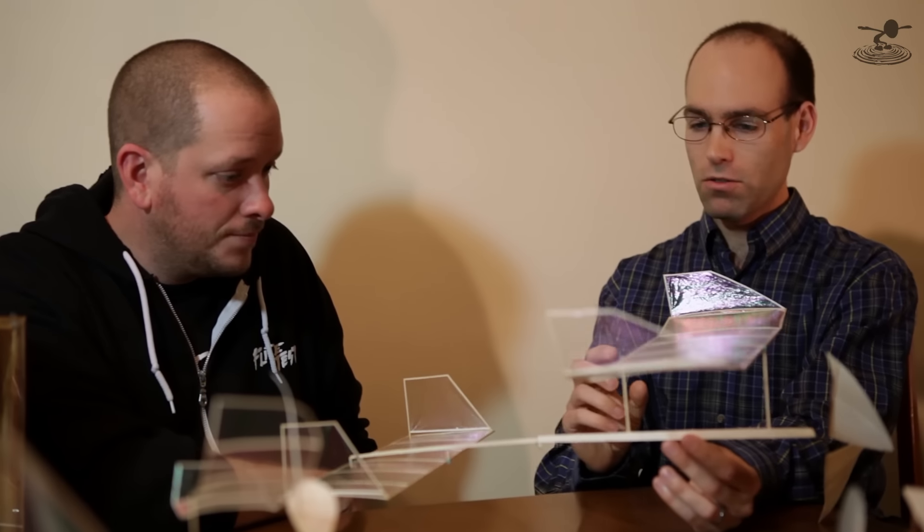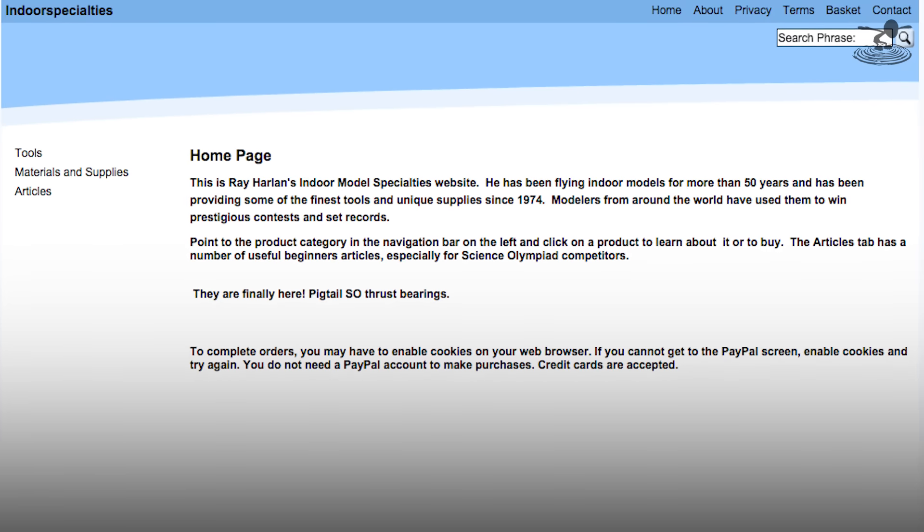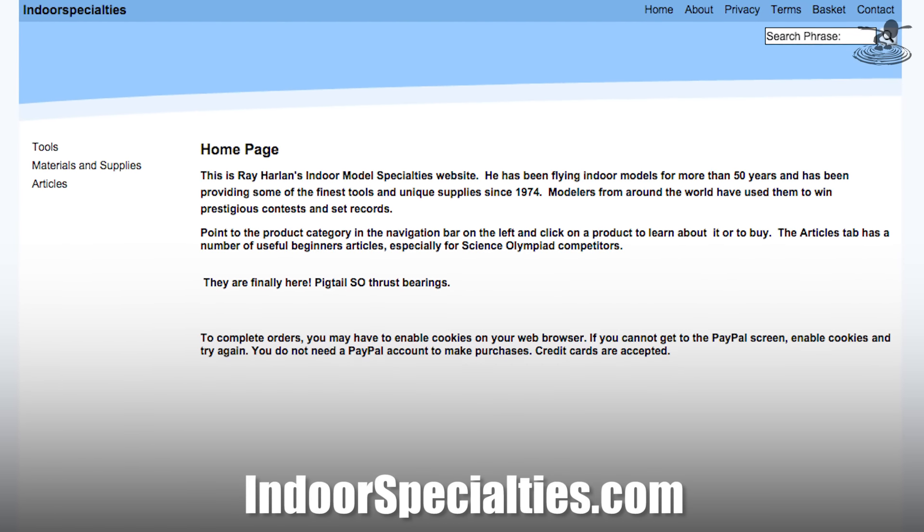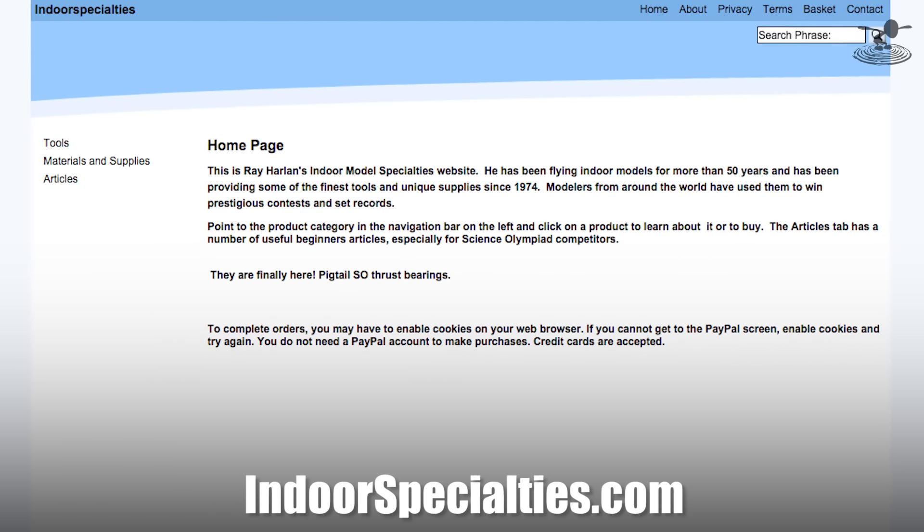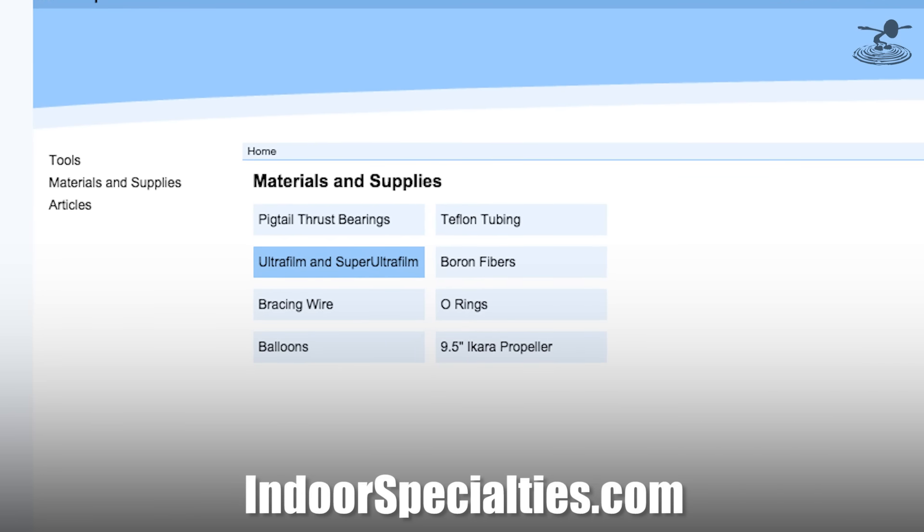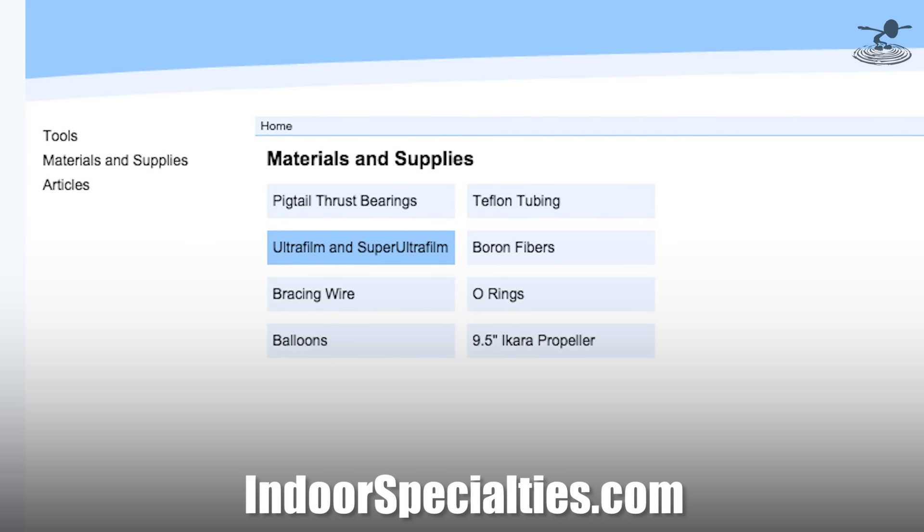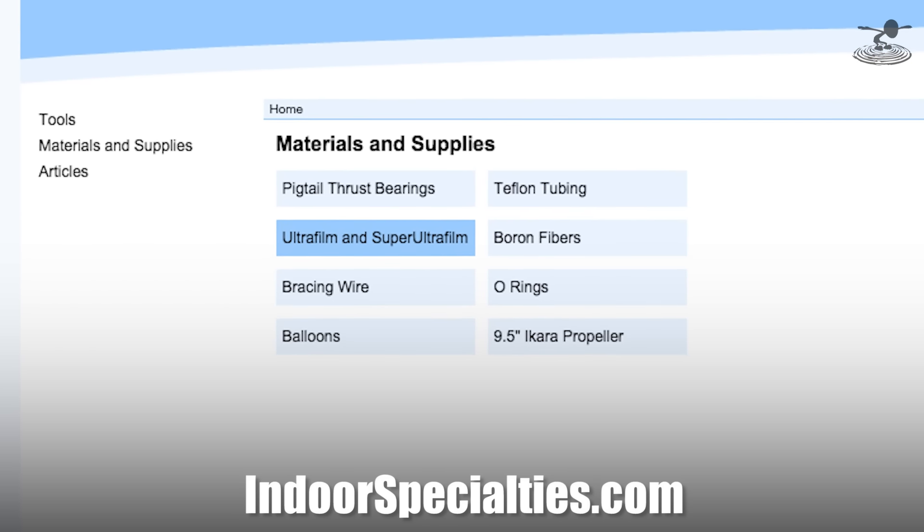Okay so to get on to the covering material, Ray Harlan who runs Indoor Model Specialties is the best source for this thin film. And of course if you go out and search for super ultra film or poly micro you'll be able to find something. This is so exciting I've been modeling for 30 plus years and I've never seen one of these in real life. I've always watched YouTube videos I've seen them back in the old days we would read in Model Airplane News and I've never got to actually see this so this is certainly just a unique and just amazing thing.